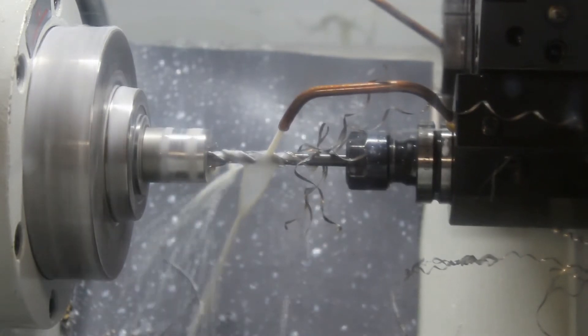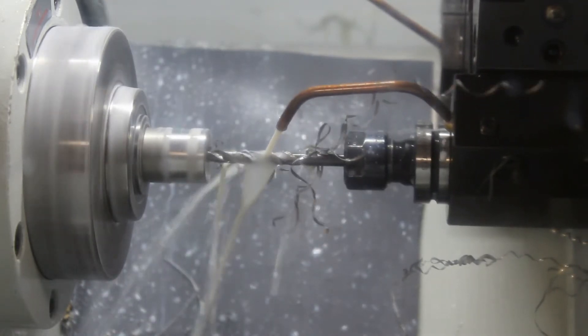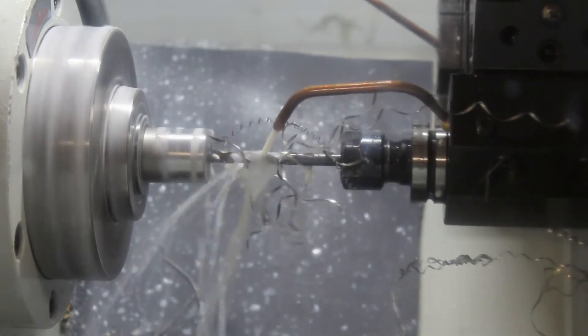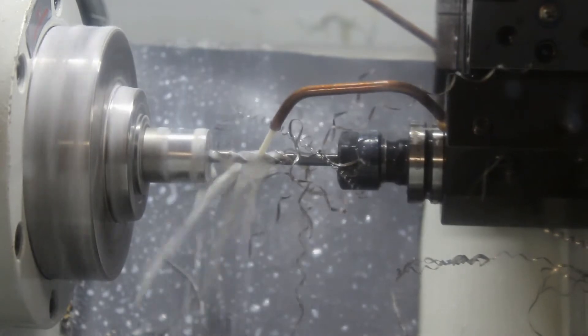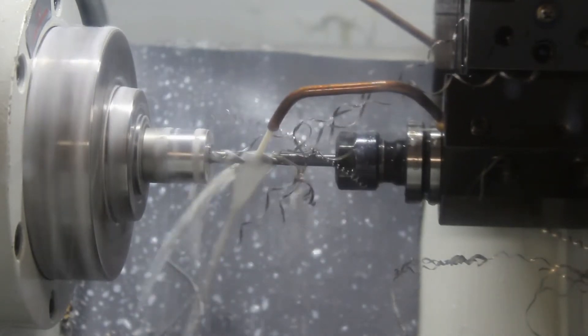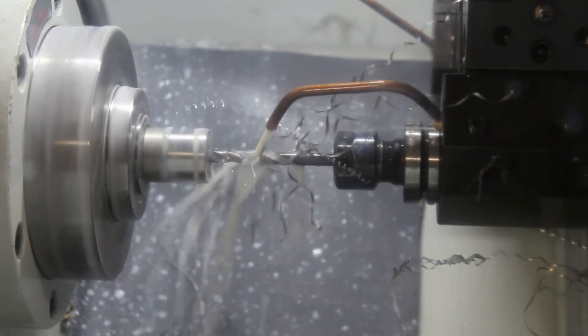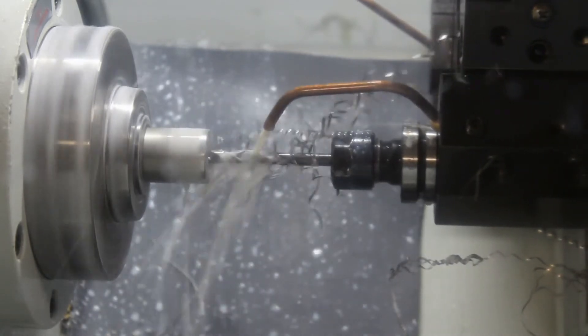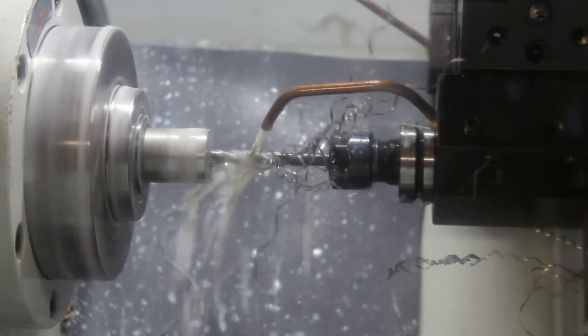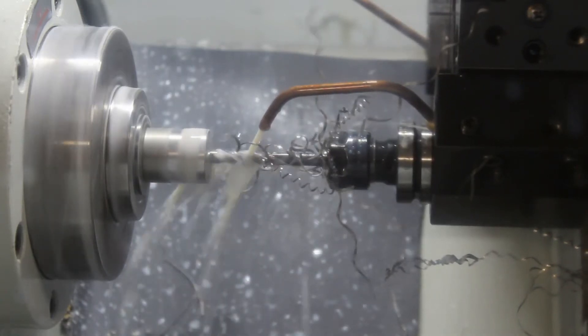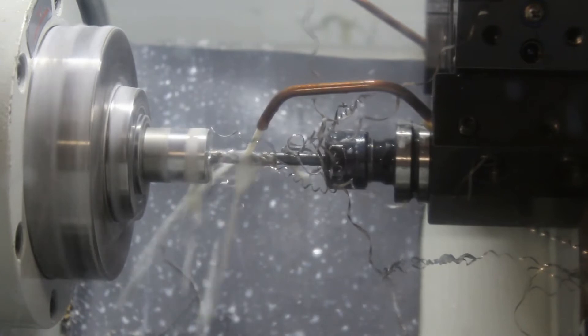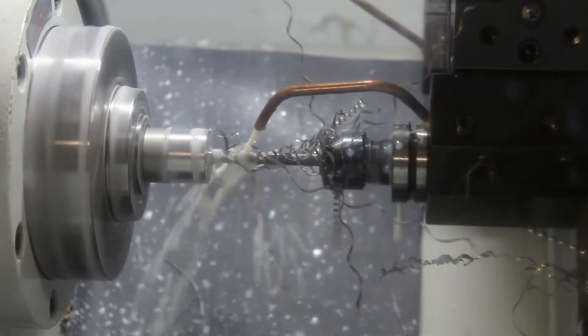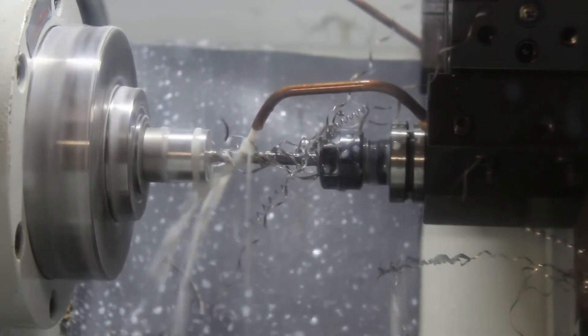I drill a little bit deeper, just so when I'm parting, the parting tool doesn't have to drill through solid material, it doesn't have to part through solid material, it'll part through the drill hole.